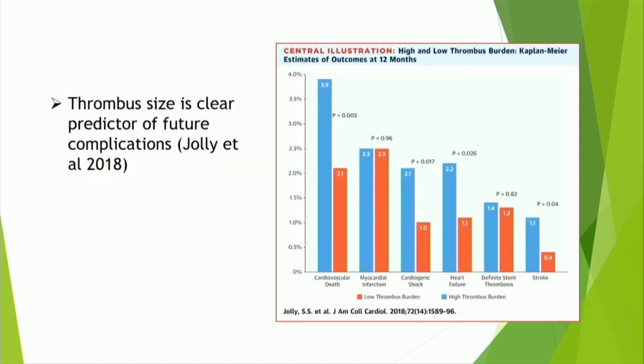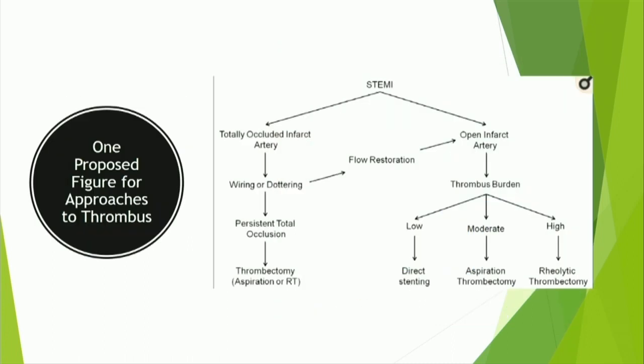This is data from the TOTAL trial. You can see increased death, increased cardiogenic shock, heart failure, and increased stroke. So large thrombus is bad.